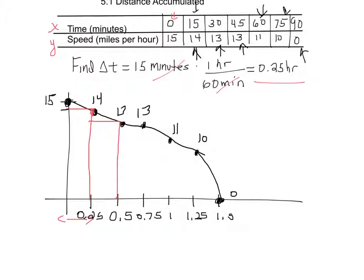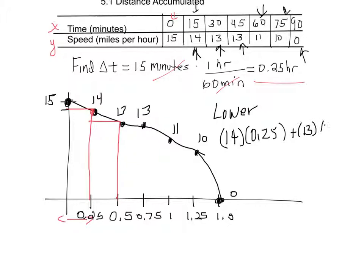The area of a rectangle is height times width. For the lower estimate, the first rectangle has a height of 14 times a width of 0.25, and the second rectangle has a height of 13 times a width of 0.25. Adding those together — the area of this rectangle plus the area of this rectangle — gives 6.75 miles. We can see it's a lower estimate because the rectangles are below the function.